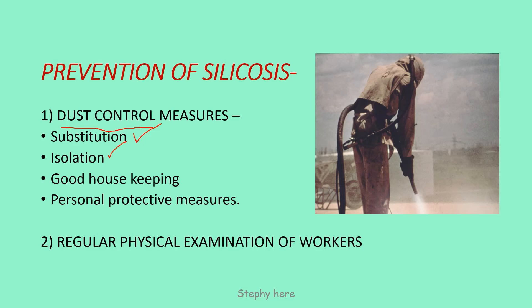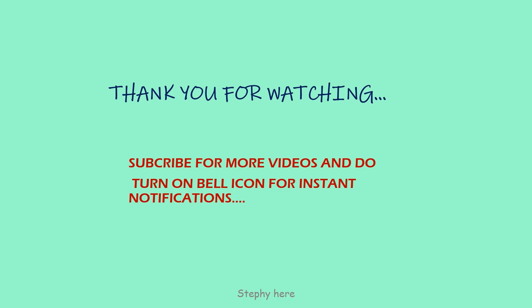Other preventive measures include isolation, good housekeeping and maintenance for workers, and providing personal protective equipment. Regular physical examination of workers is very important for the screening of Silicosis.